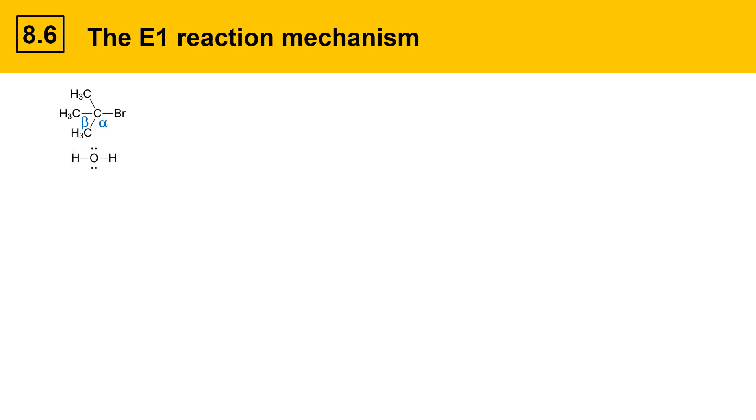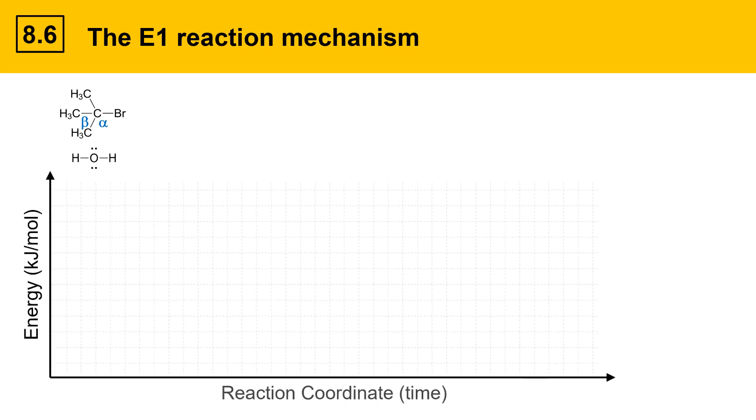The energy changes involved in the E1 mechanism can be graphed, and we'll do that on this slide. On the y-axis we have energy, and on the x-axis we have a reaction coordinate with units of time. We'll start off here with the starting materials and draw a line on the energy level diagram to indicate their position. The height on the energy level diagram indicates the energy of the reactants.